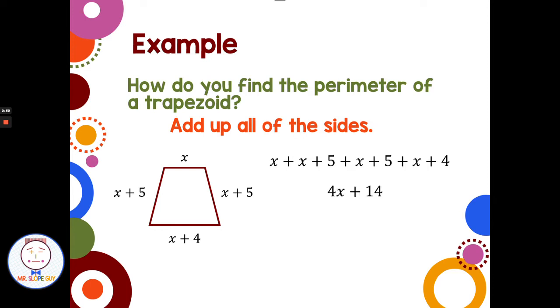So 4x plus 14 is my perimeter of the trapezoid. Notice how with like terms, we cannot combine 4x and 14 together. It's just 4x plus 14.